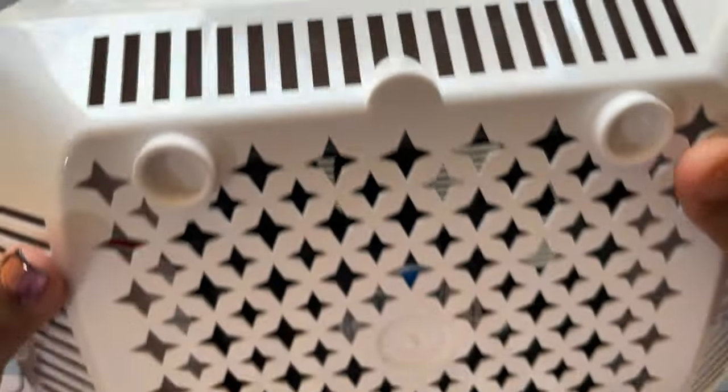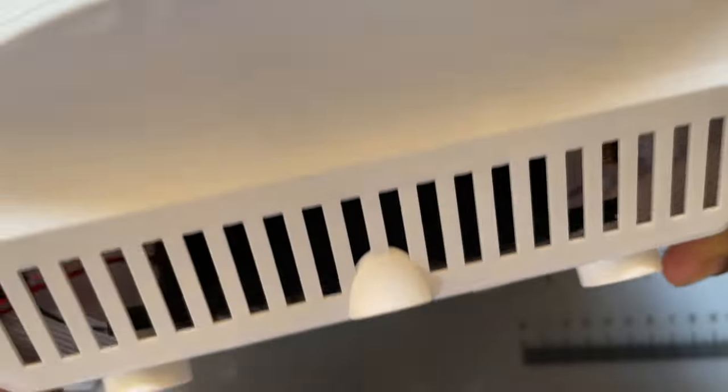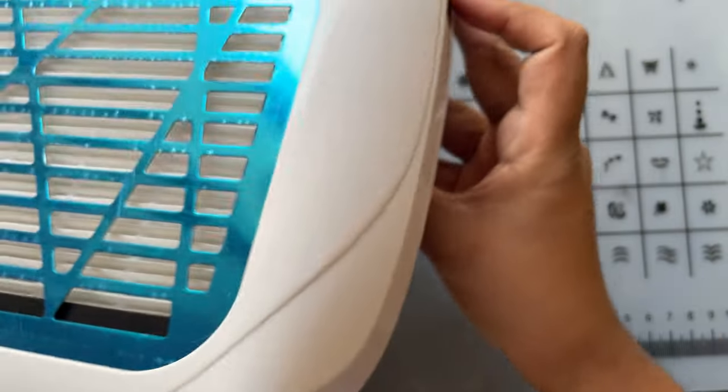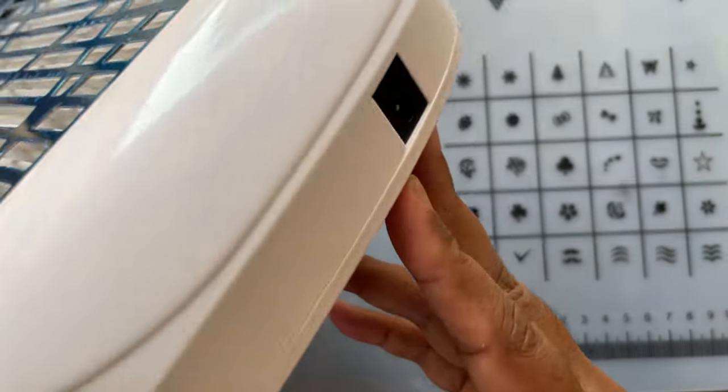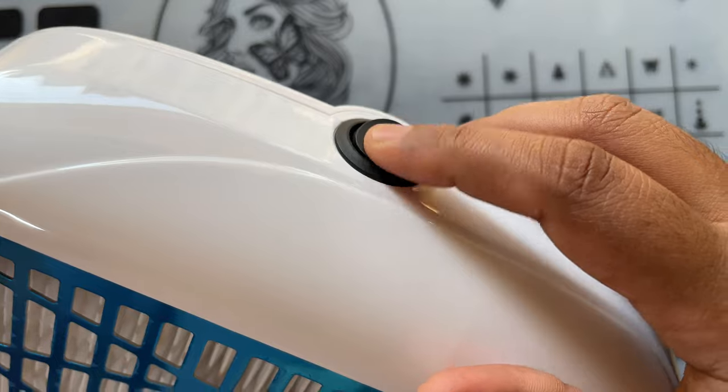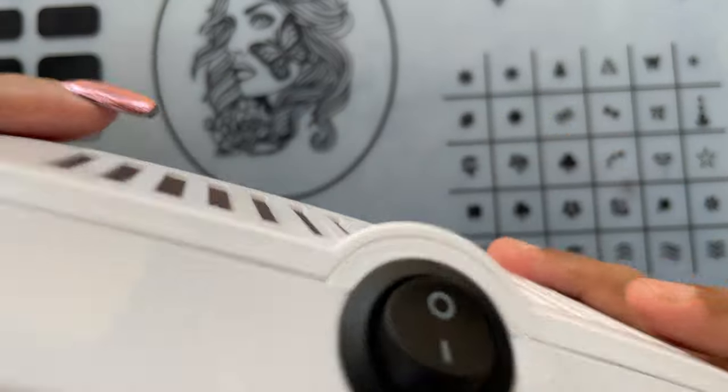There are a lot of open holes at the bottom side of the machine and these holes are to provide ventilation. This way the machine will be cool when it is in use and it will also help to extend the life of the machine. On one side we have the jack to plug the pin in and on the other side we have the on-off button.